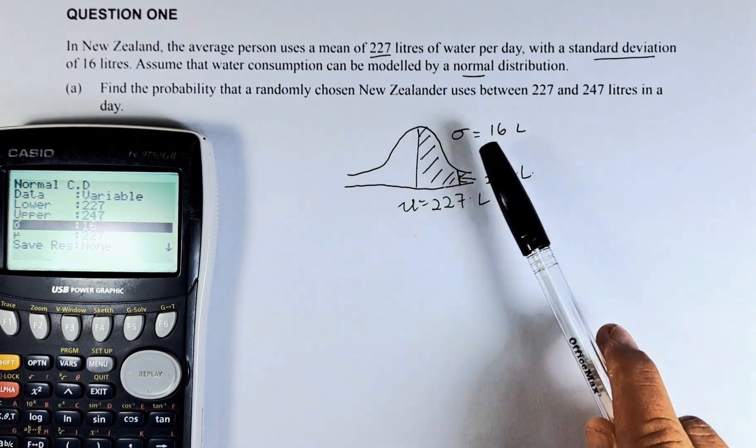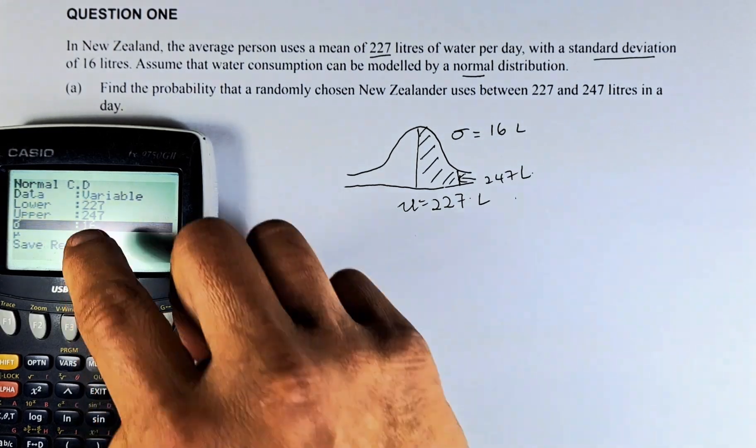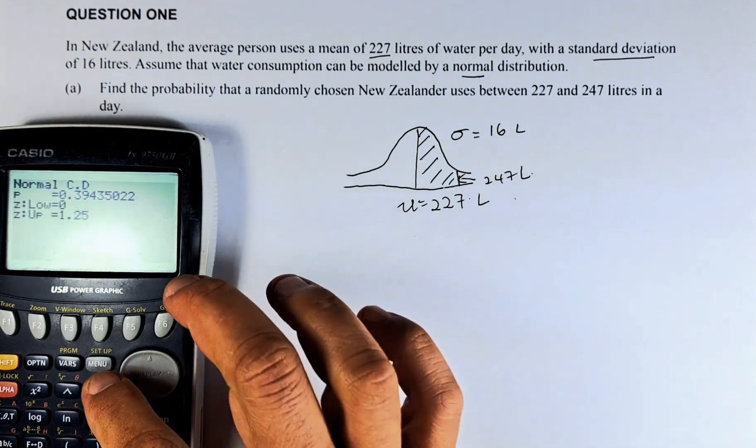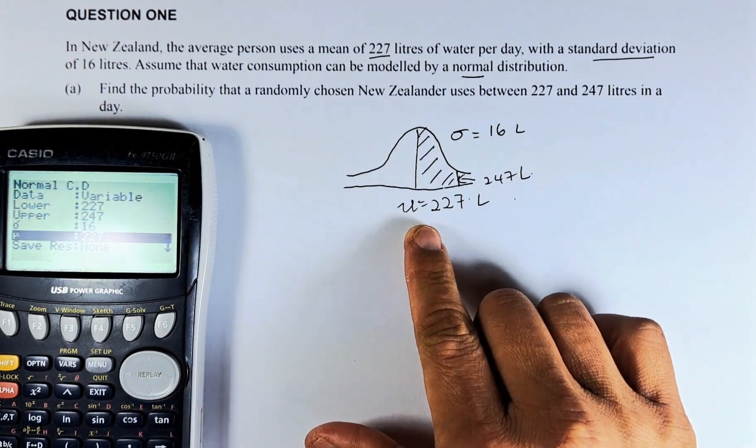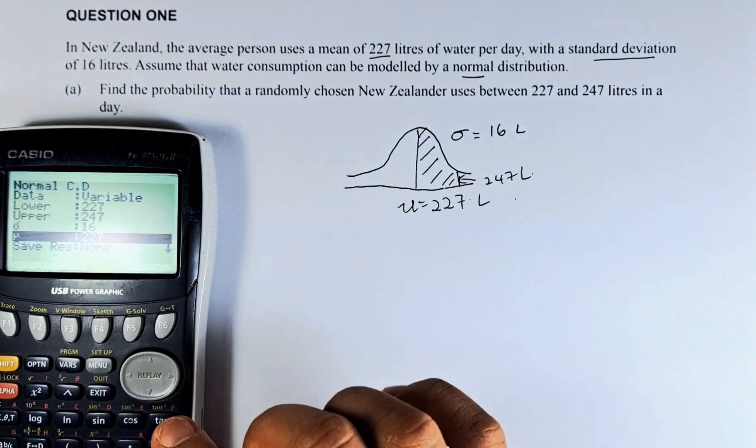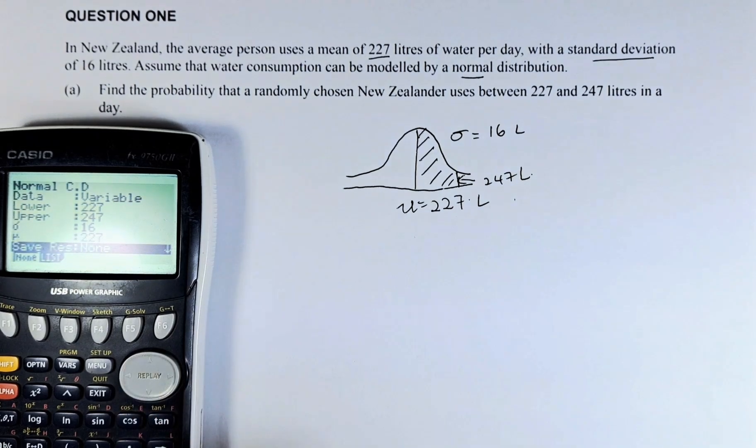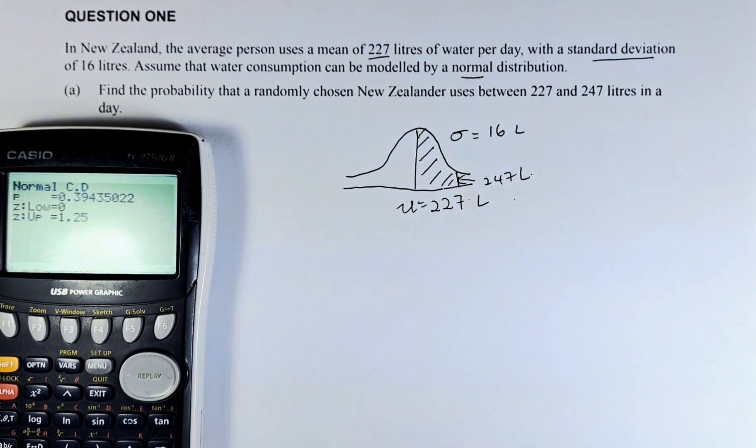Sigma is the standard deviation. We have done it, 16, and then we execute. And then your Nu is the mean, which is 227, which you key in there already. And then you press enter, and then you press the execute button. And the answer.